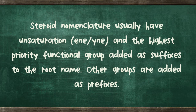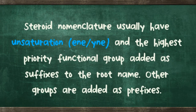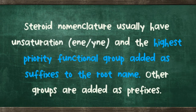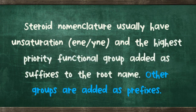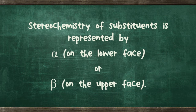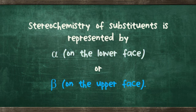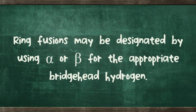Steroid nomenclature: steroids usually have unsaturation indicated in the name, and the highest priority functional group is added as a suffix to the root name. Other groups are added as prefixes. Stereochemistry of substituents is represented by alpha on the lower face or beta on the upper face. Ring fusions may be designated by using alpha or beta for the appropriate bridgehead hydrogen.